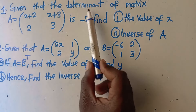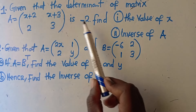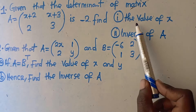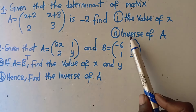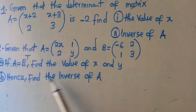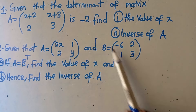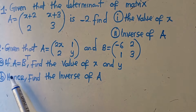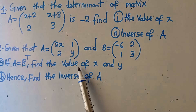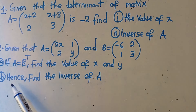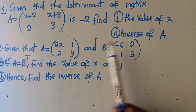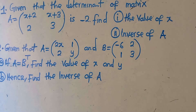Given that the determinant of matrix A is negative 2, find the value of x and the inverse of A. We've also got a second question saying: given that A equals this and B equals that, if A equals B transpose, find the value of x and y, and hence find the inverse of A. These are the two questions. After this, make sure you are able to answer any question that will come in an exam. We go straight to the first question.